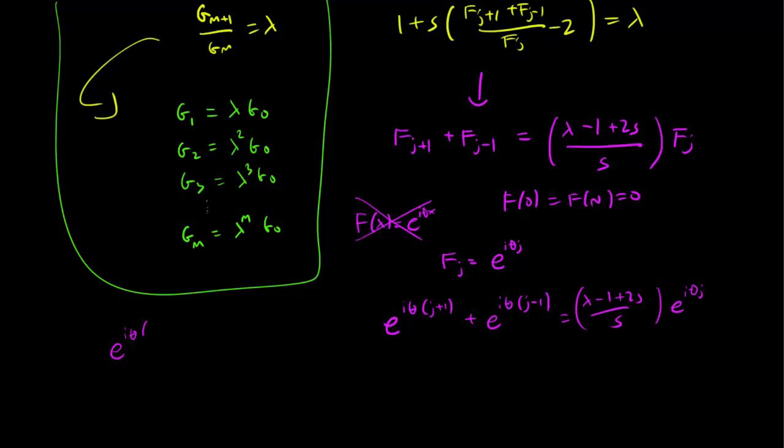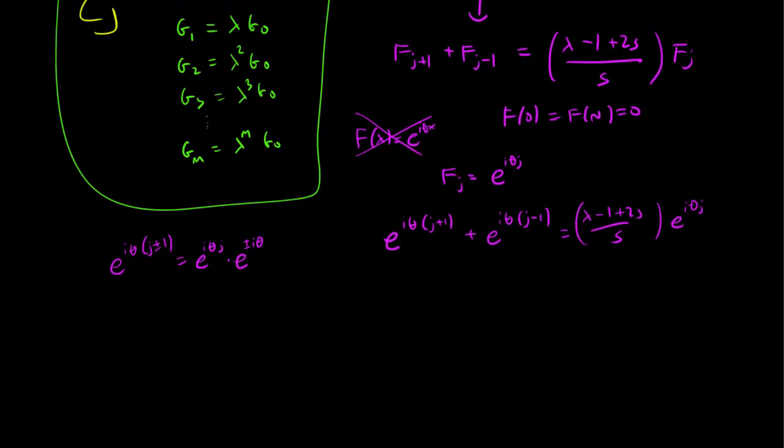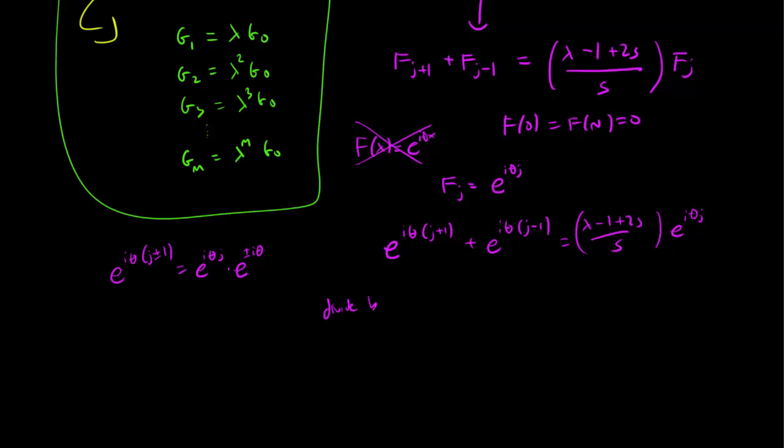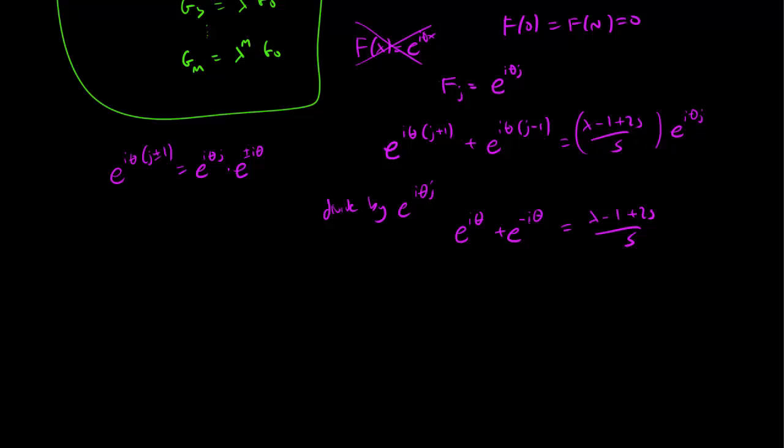However, remember that e to the i theta (j plus or minus 1), you can separate out the exponentials like so. So we can divide by e to the i theta j. And what we are left with is e to the i theta plus e to the minus i theta equals lambda minus 1 plus 2s over s. So remember that we had this rule that e to the i theta plus e to the minus i theta is just going to be equal to 2 cos theta. This is the basic relationship between exponentials and cosines. So we get this relationship between lambda and theta.